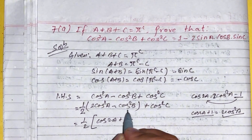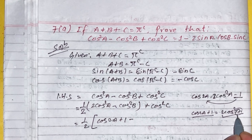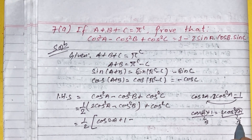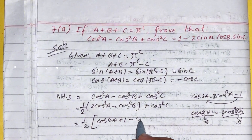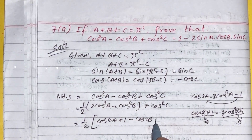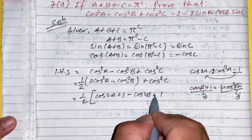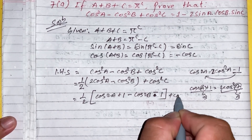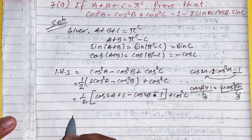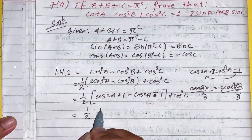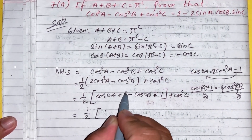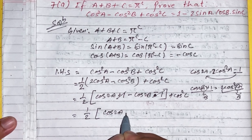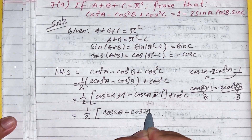Similarly, 2 cos square b equals cos 2b plus 1. Expanding and simplifying: the plus one and minus one terms cancel, leaving one-half times cos 2a minus cos 2b, plus cos square c.